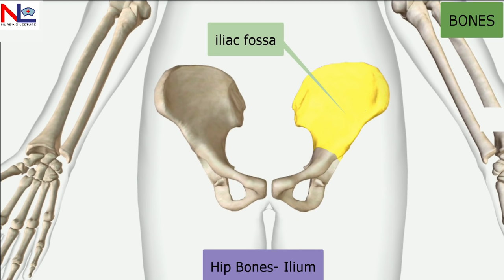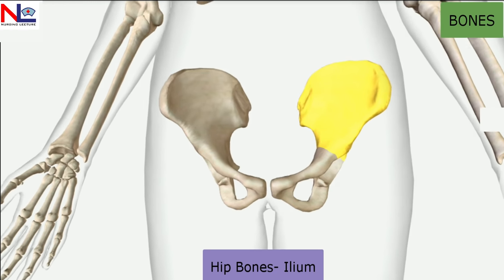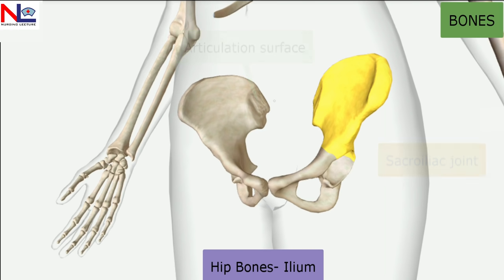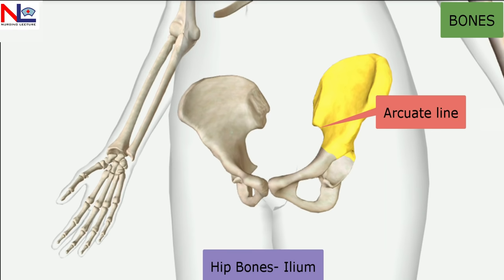Just below the posterior inferior iliac spine is the greater sciatic notch, through which the largest nerve in the body — the sciatic nerve — passes. On the posterior aspect of the ilium is a rough area termed the iliac tuberosity, which gives attachment for ligaments. The articulating area articulates with the sacrum to form the sacroiliac joint. From this articulating surface, the arcuate line runs anteriorly, which is an important landmark from an obstetrical point of view.